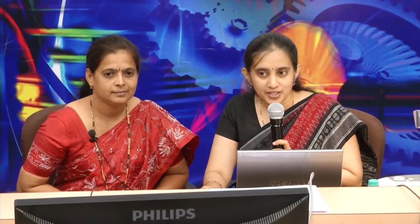There is no single correct answer to this question. Now move to the pair phase: turn to your neighbor and discuss your reason with them, and your neighbor will do the same. Share your reasons with each other. This is the phase where you can actually talk to your neighbor and together come up with a stronger reason. Since there may be multiple valid answers, this is a good time to find out what other possible answers are and collectively see what is really happening in this scenario. Take about four or five minutes for this phase.